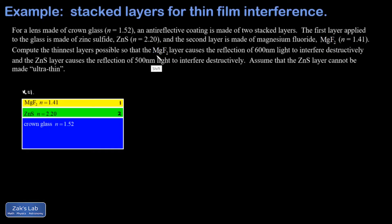I'm told that I want my magnesium fluoride layer to cause destructive interference on the reflection of 600 nanometer light. The first thing we have to do is find the wavelength of that 600 nanometer light inside the magnesium fluoride layer, and I'm going to call that lambda 1 prime.